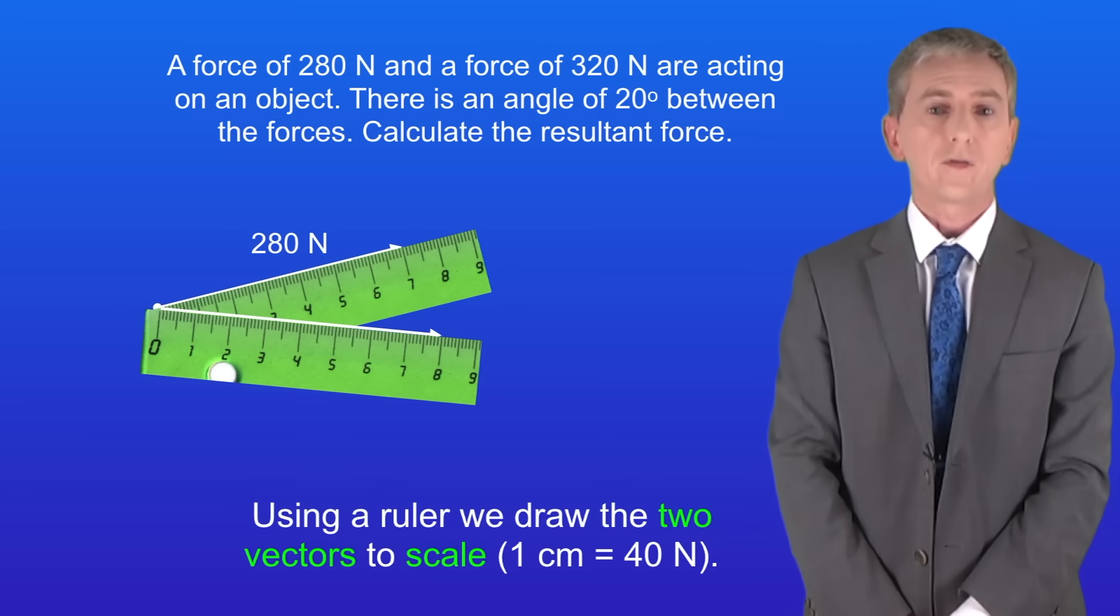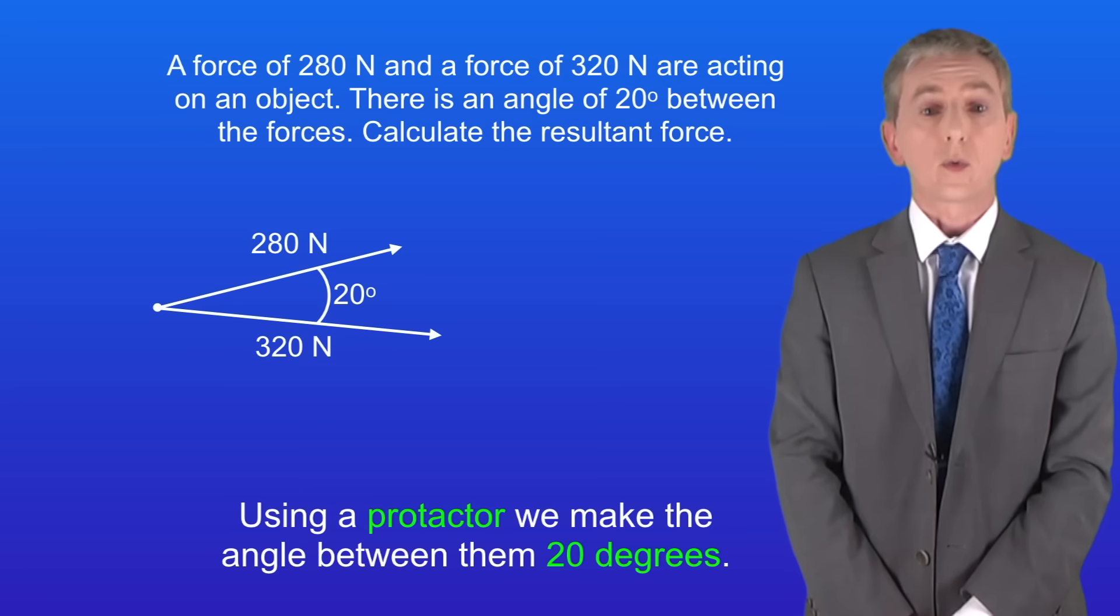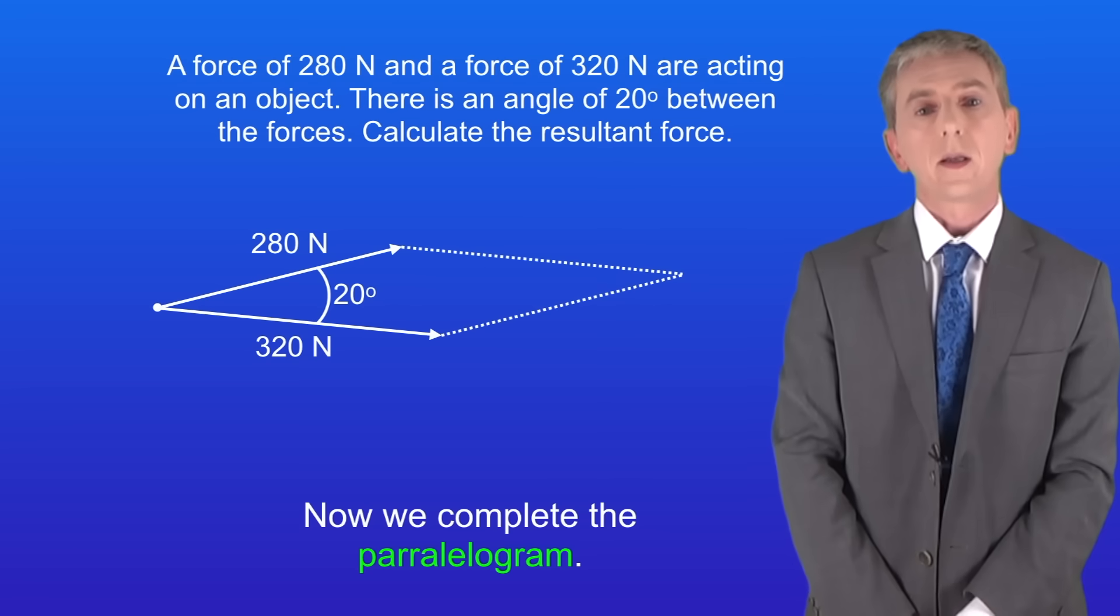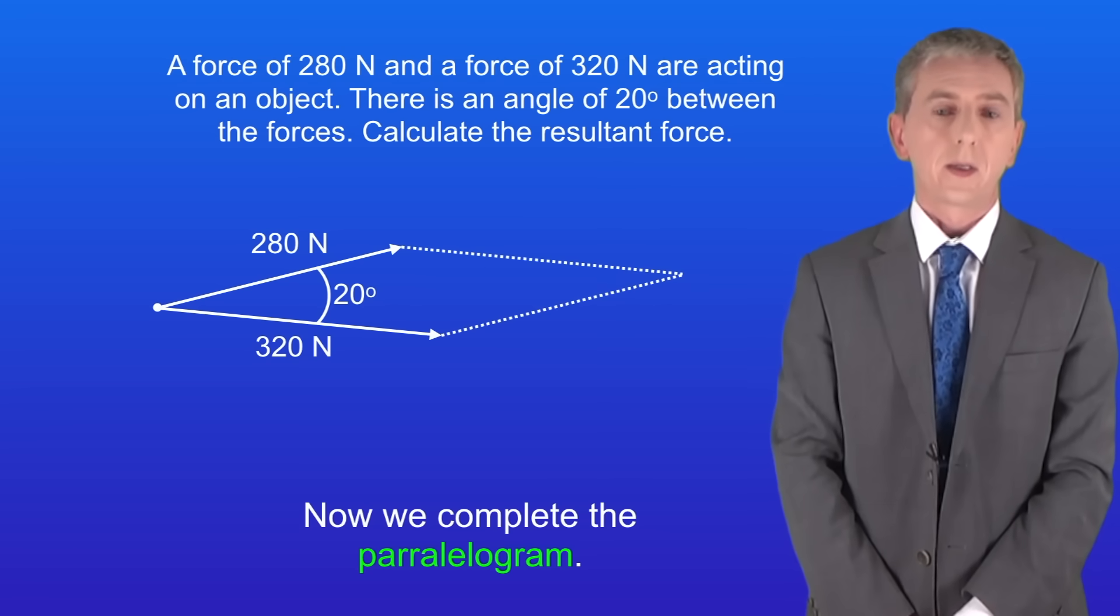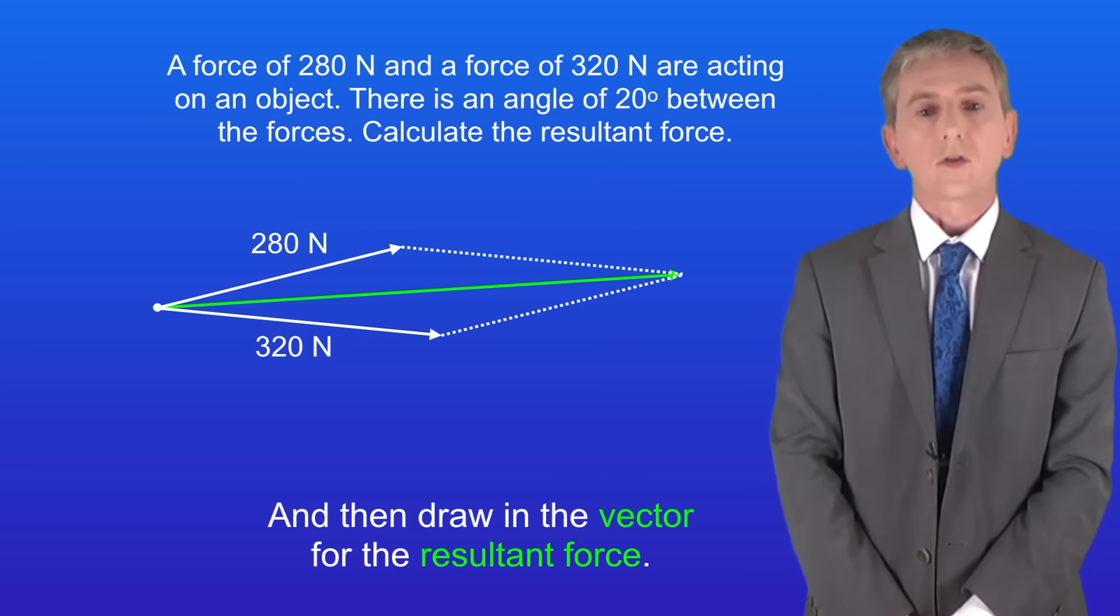Ok, using a ruler we draw the two vectors to scale, and again I've used 1 centimeter equals 40 newtons. And using a protractor we make the angle between them 20 degrees. Now we complete the parallelogram. And now we draw in the vector for the resultant force. This vector has a length of 14.8 centimeters.